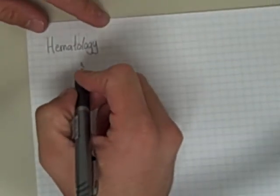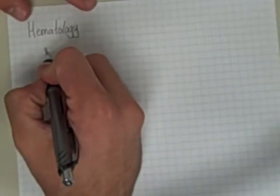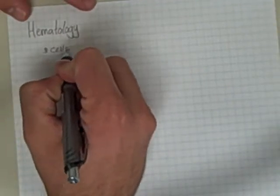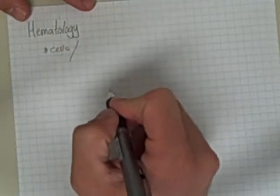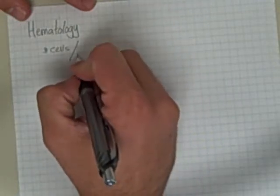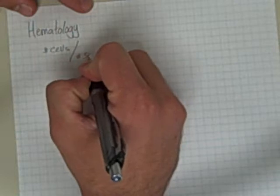So basically what we're talking about is you're given a number of cells and usually that's related to you as a number of cells in a certain number of squares.